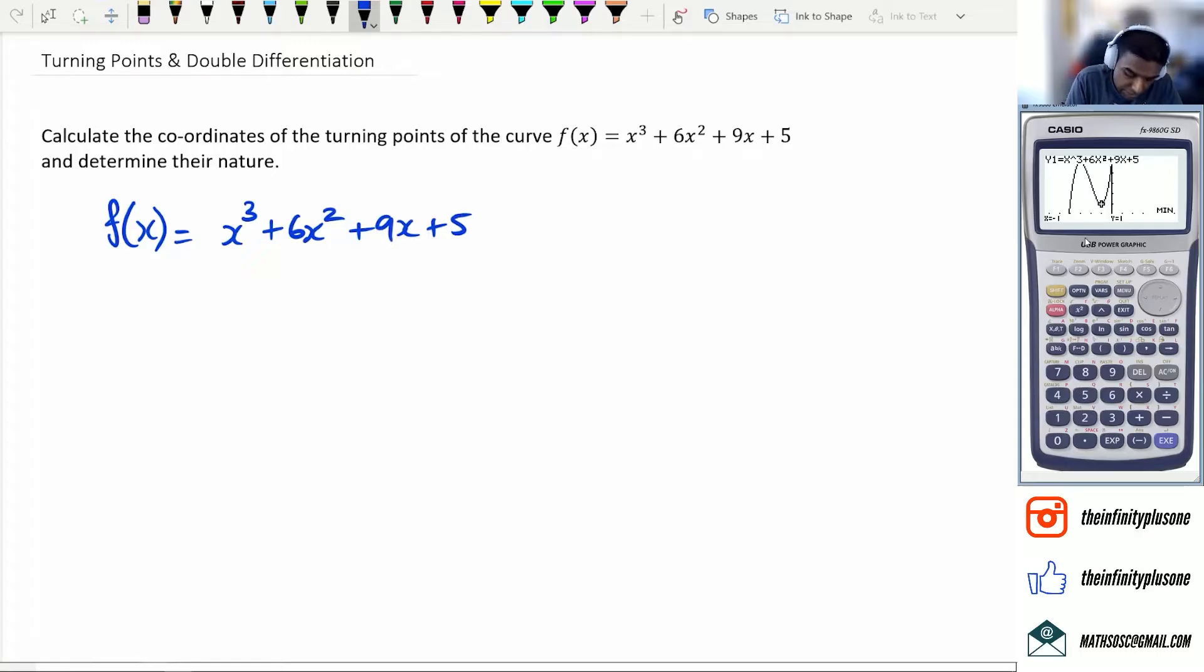Then I'm going to differentiate the function. So I'm going to get f'(x) equals 3x squared plus 12x plus 9. Now, remember that turning points happen when the gradient equals 0. So TP when f'(x) equals 0. So I'm going to put it as 0 equals 3x squared plus 12x plus 9.